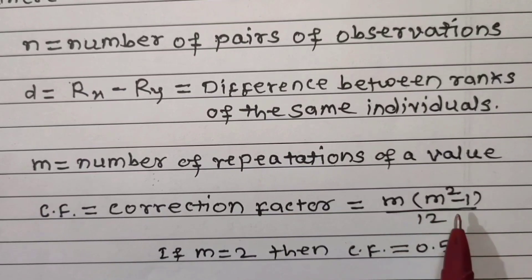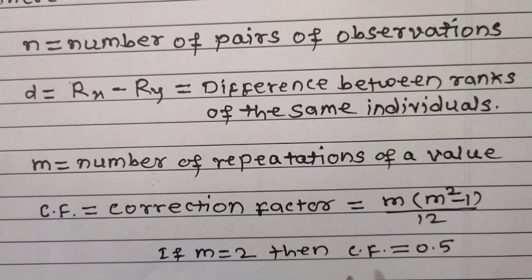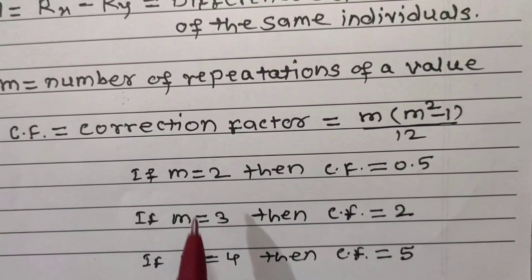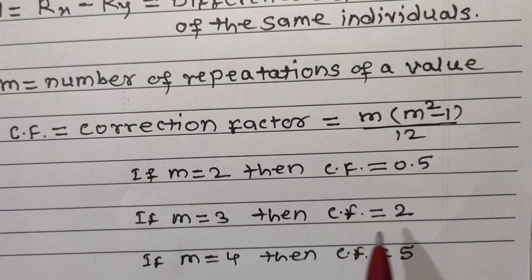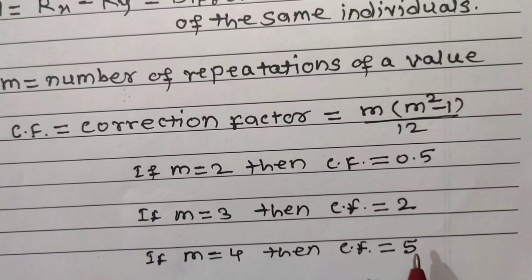This correction factor is a fixed value. If m equals 2, the correction factor is 0.5. If m equals 3, the correction factor is 2. And if m equals 4, the correction factor is 5.